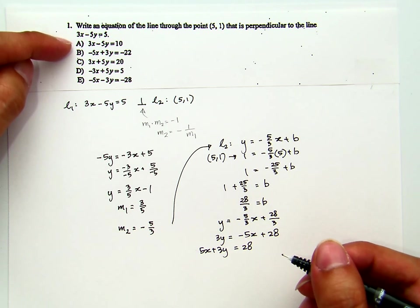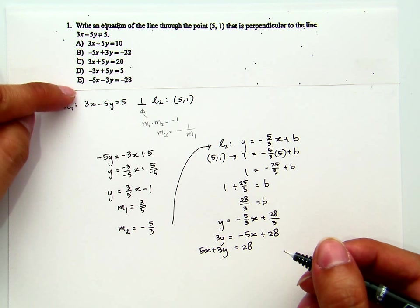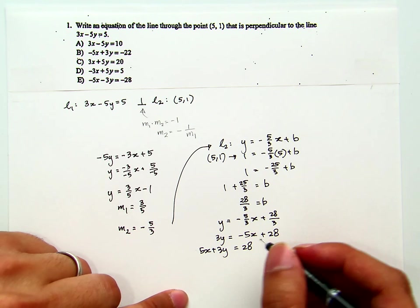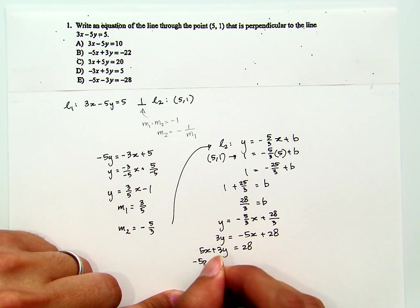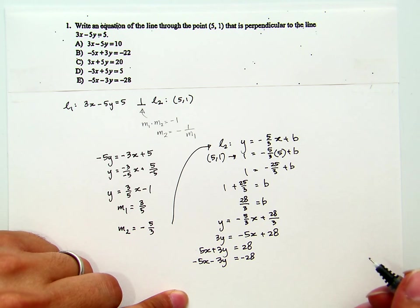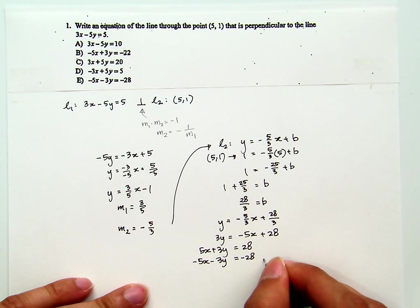Now, seems like we don't have that here. But we have this one. You see, that's the opposite of this, right? Negative 5x minus 3y equals negative 28. That's the solution part. The answer is E.